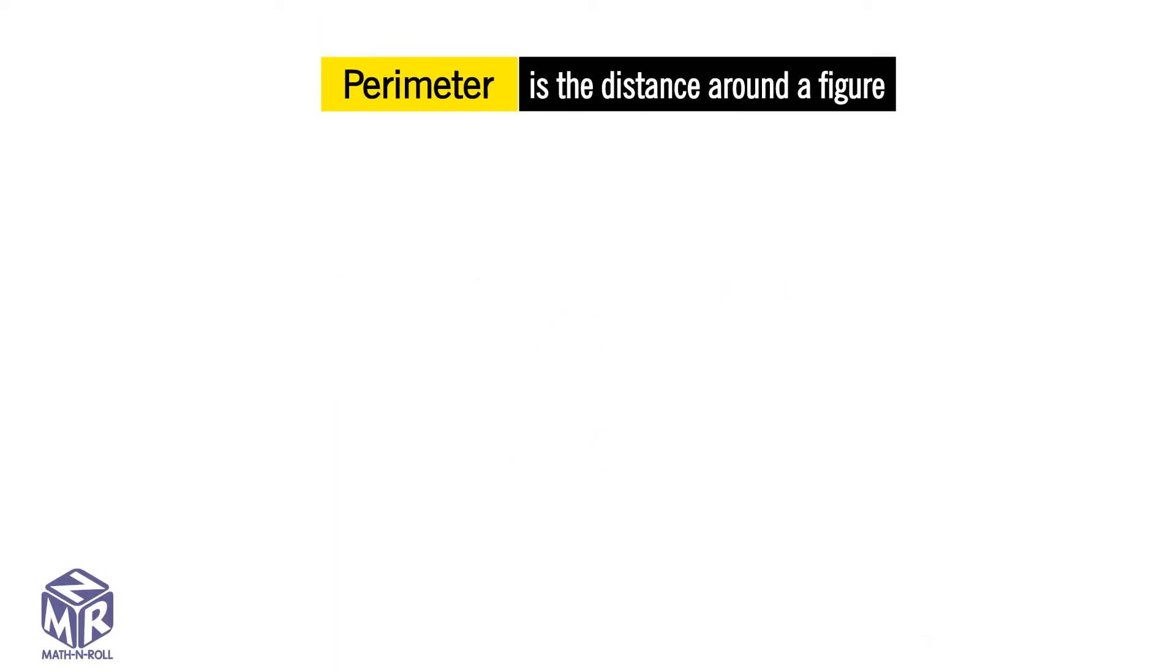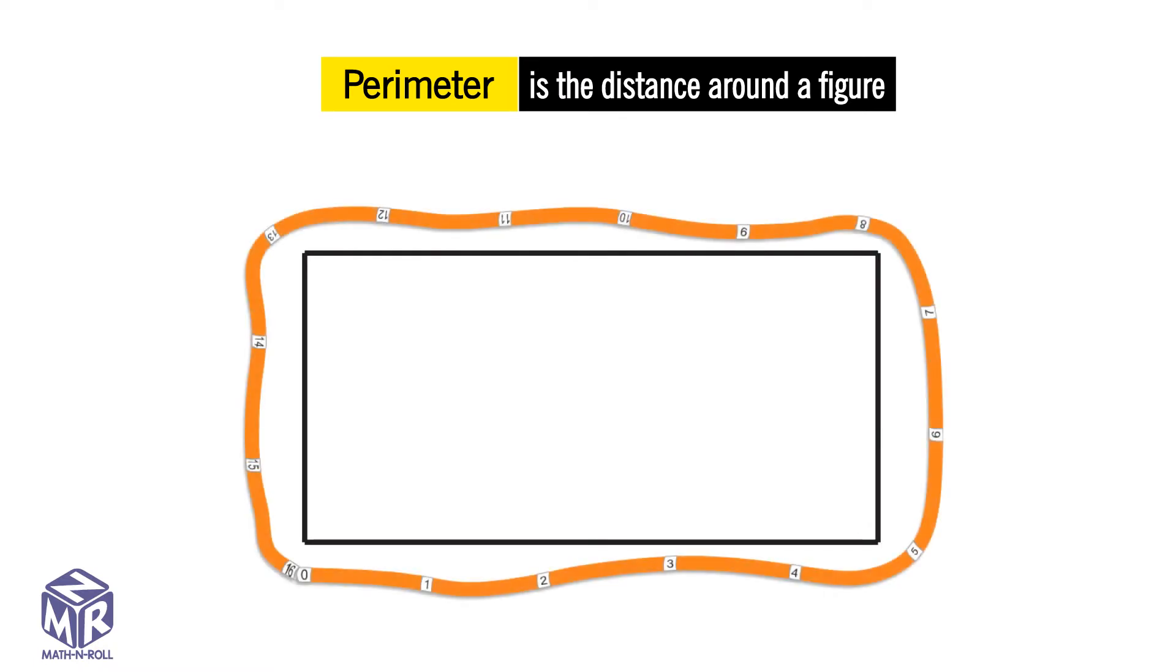Perimeter is the shortest distance around a figure. But what do we mean by distance? Can we use this rope to measure the perimeter of the rectangle? No, because this rope does not measure the shortest distance around the shape.